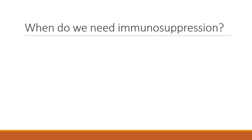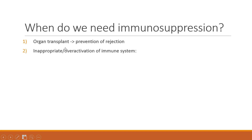Before we get into it, let's try to answer this basic question on the screen: when do we need immunosuppression? There are two instances where immunosuppression is absolutely vital. Firstly, in organ transplantation, in order to prevent rejection of the new organ. And secondly, if there is inappropriate or over-activation of our own immune system — this can occur in autoimmune diseases such as rheumatoid arthritis, where there's an inappropriate activation of our immune system against self-antigens.